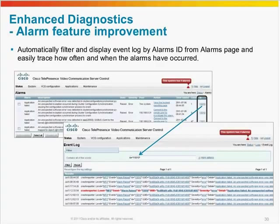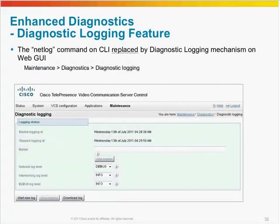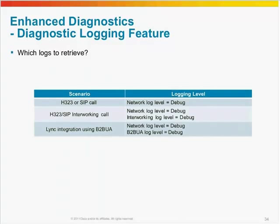Snapshot is a powerful function for debugging. We now have three levels of snapshot, whereas previously we only had the full snapshot functionality. The netlog is no longer available in the admin shell on the VCS — it is now implemented in the web interface. A great new and simple function is to set markers on network traces. This will make it easier for an engineer to read the log files and identify the problem. We always recommend network traces be set to the debug level, which is equal to the previous 'network 2' command. If interworking is in the problem scenario, you should also raise the interworking log level to debug. Same if you are troubleshooting the back-to-back user agent — the B2B UA log level should be set to debug as well as the network log.